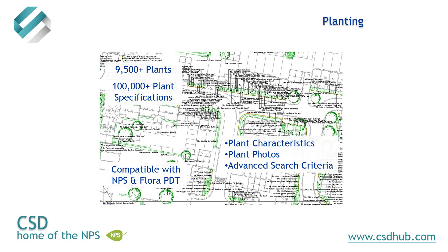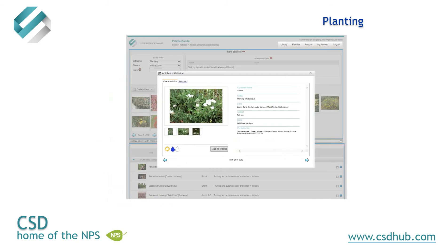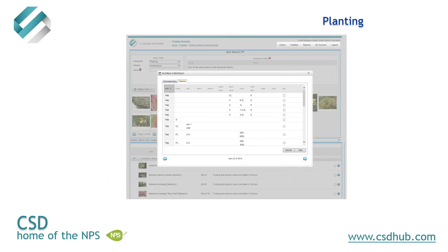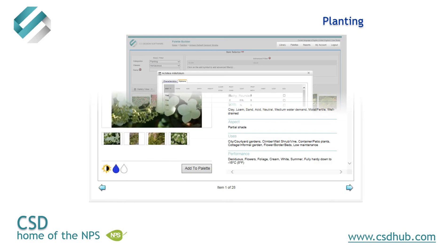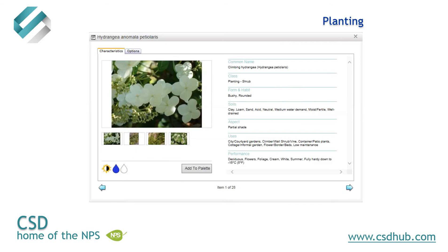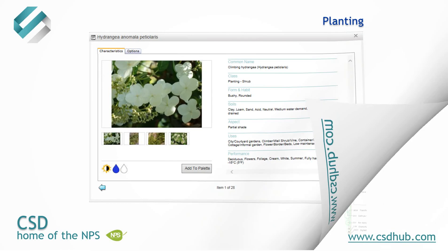Plants are fully searchable by characteristic including flower colour, leaf, sun/shade, hardiness, moisture, habit, feature, and use. All planting characteristic information including photos is available when searching web libraries in the pallet builder, from downloaded pallets, from labels inserted in drawings, and from web reports.